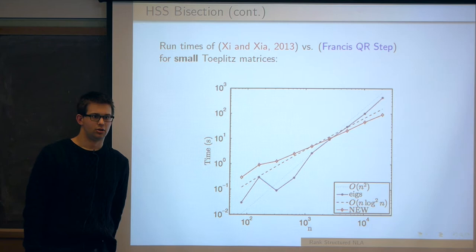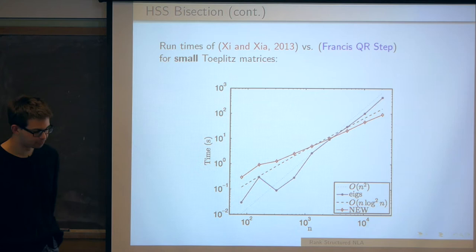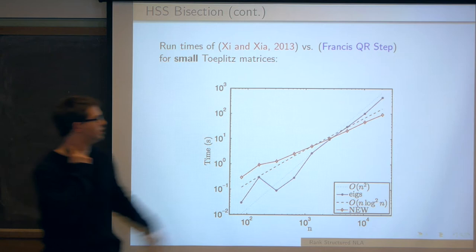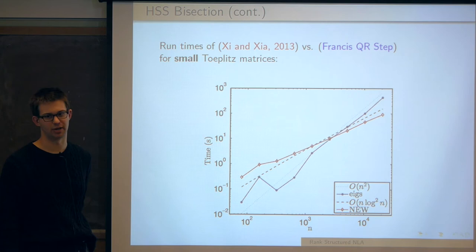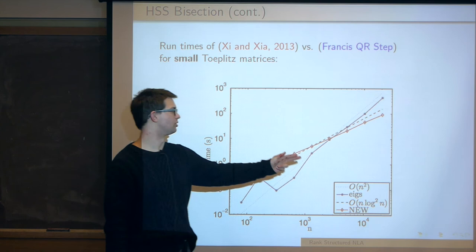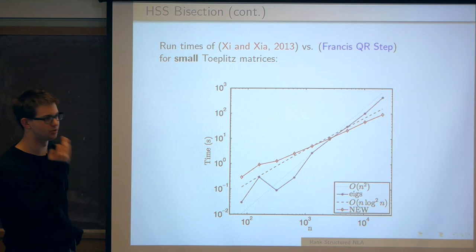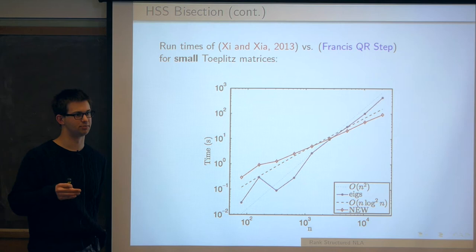The bisection scheme takes the real line and, if you're only focused on eigenvalues in a certain region, splits it up and moves along the line to see how the inertia changes at each point. We found very fast ways to calculate the inertia for an HSS matrix in linear time using LDL factorization — Sylvester's inertia theorem says the inertia of A equals the inertia of the diagonal D in an LDL factorization. And yes, we have a fast method for going from HSS to LDL. For up to O(log n) eigenvalues we get linear time; more than that, this algorithm is quadratic but very accurate for symmetric matrices.